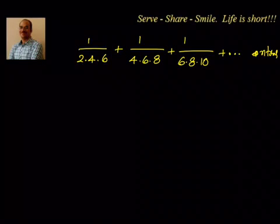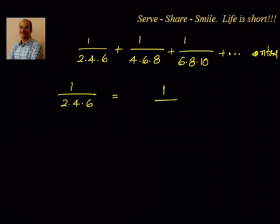For that, I will take the first term here. The first term is 1/(2·4·6). When I want to write this as the difference of two consecutive terms, what comes to mind is 2·4 and 4·6, because 2+2=4 and 4+2=6. So I write 1/(2·4) − 1/(4·6). This is good because the next term can be written as 1/(4·6) − 1/(6·8), and many terms will cancel, giving the answer very easily.